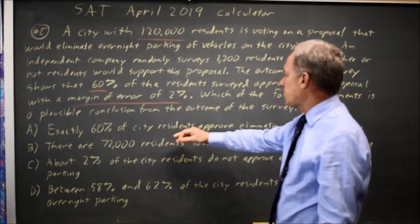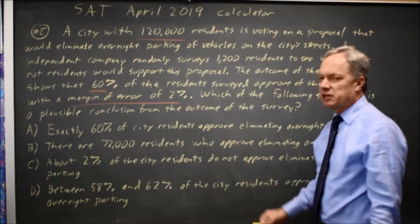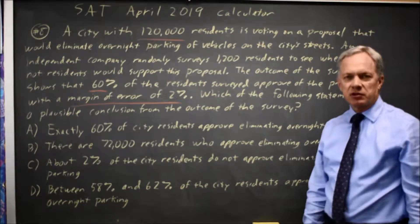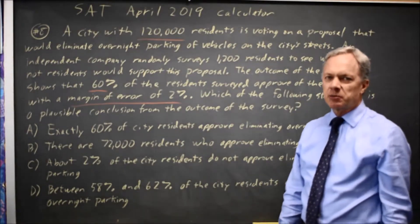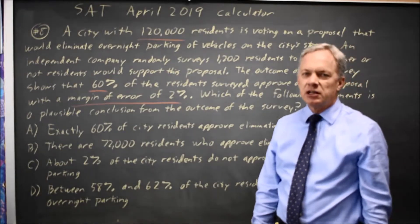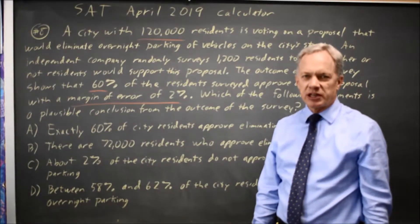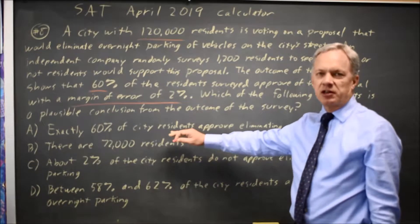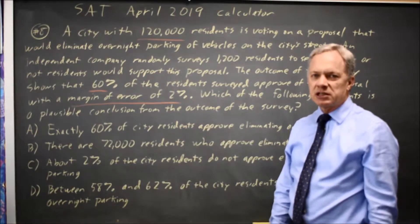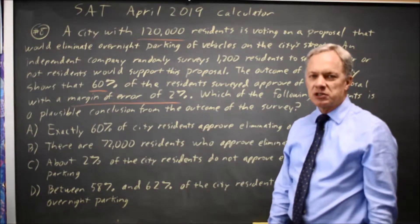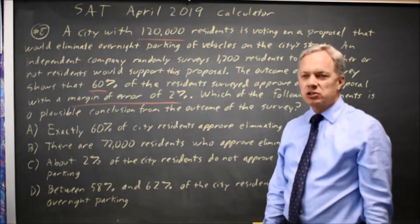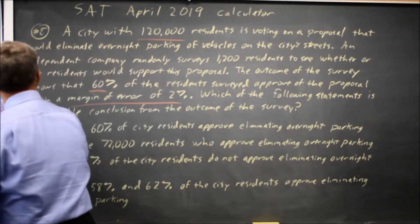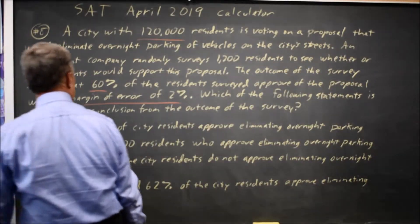Choice A says exactly 60% of city residents approve of eliminating overnight parking. You should always be skeptical of any exact answer with surveys — the only way to have the exact number is to have a census where everyone is surveyed and to believe that people are answering honestly. So choice A would not be correct.